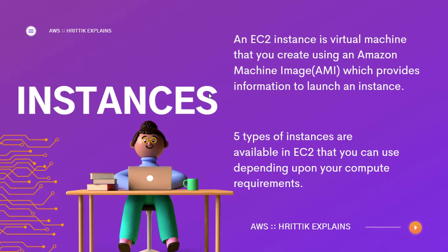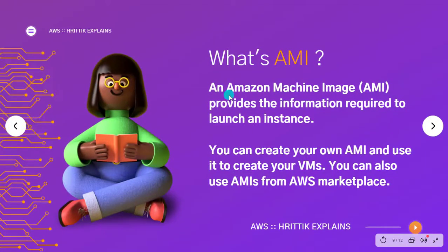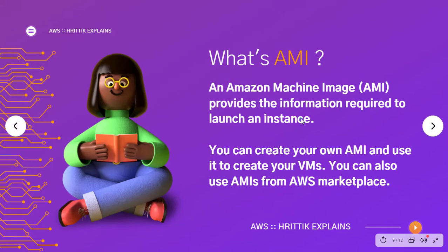What are instances? An EC2 instance is a virtual machine that you can create using Amazon's Machine Images, which provides information to launch an instance. It's basically the pre-configuration required to launch AWS EC2. There are five types of instances which we will talk about later in the video. As discussed, an AMI is the information required to launch an instance — all of the pre-configuration to create our virtual machines. There are a lot of AMIs like Windows AMI and Linux AMI, anything you require to launch your VM or virtual machine.